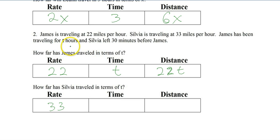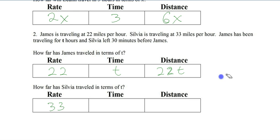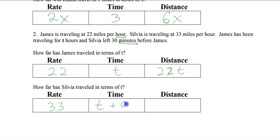Sylvia has her time compared to t. It says Sylvia left 30 minutes before James. If she left before James, she heads out and then 30 minutes later James starts — so it takes him a while to catch up, which means Sylvia has more time. But we can't just put 30 because that's minutes, not hours. So it's 30 over 60, which reduces to 0.5. When we multiply it, it's 33 times (t + 0.5). And those are their distance formulas.